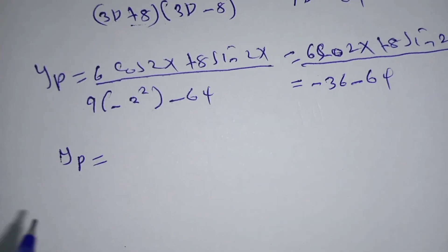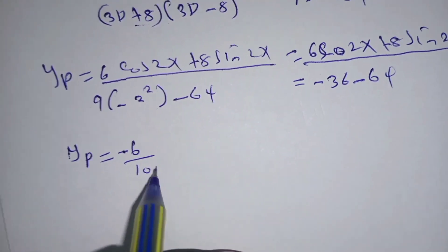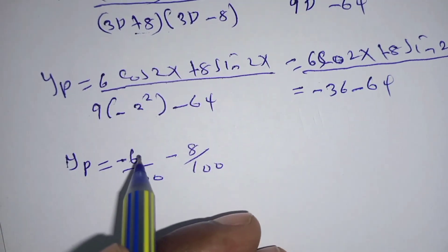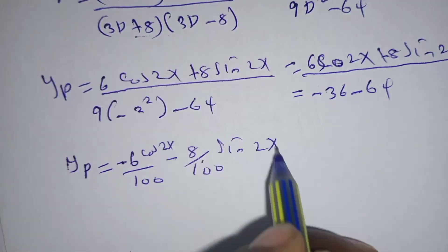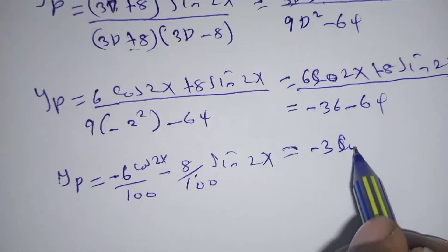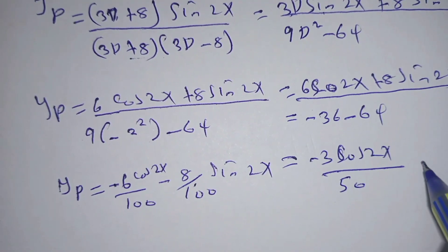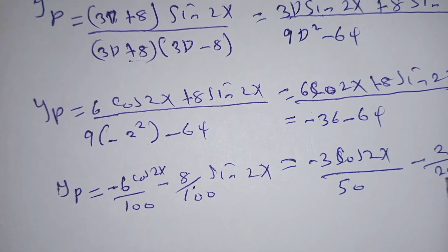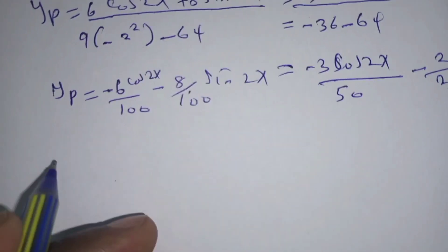Therefore yp equals 6·cos(2x) plus 8·sin(2x) all divided by negative 100, which simplifies to negative 6 over 100 cos(2x) minus 8 over 100 sin(2x). Simplifying further, yp equals negative 3 over 50 cos(2x) minus 2 over 25 sin(2x).